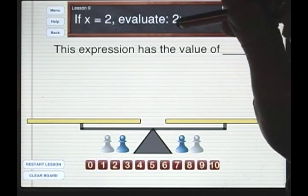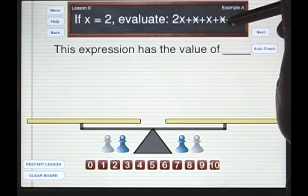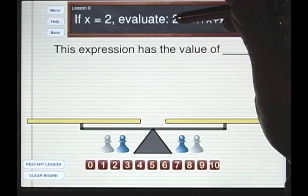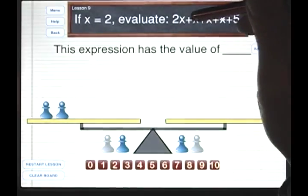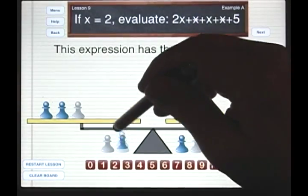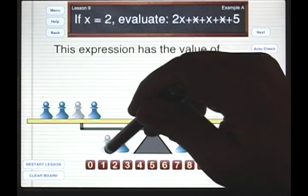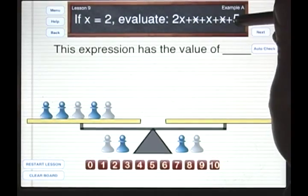In order to evaluate an expression, first we will set it up on one side of the balance scale. So let me do that. I have 2x plus a star plus an x plus a star plus a 5.